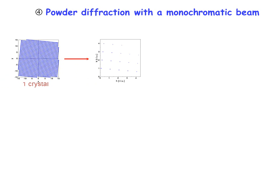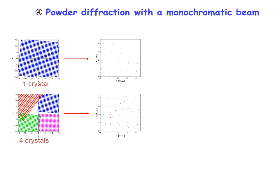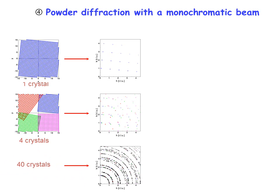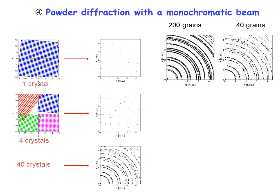The most used method to characterize crystals is probably powder diffraction, generally with a monochromatic beam. With a single crystal lattice in real space and its Fourier transform as the reciprocal lattice, if you consider multiple crystallites all in different orientations, rotating the reciprocal lattice gives overlapping patterns. Increasing the number of crystallites, you start to see circles forming, and with a very large number of randomly oriented grains, you end up with continuous rings around the origin.